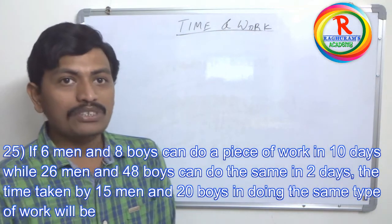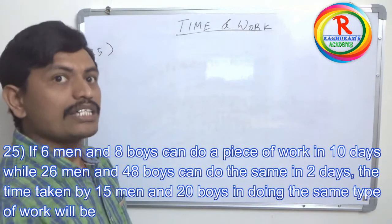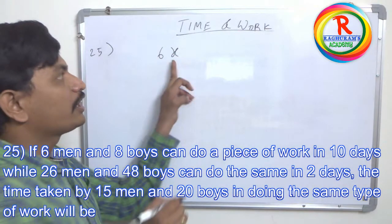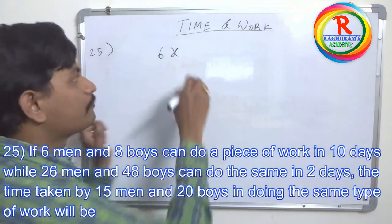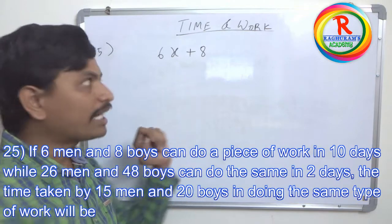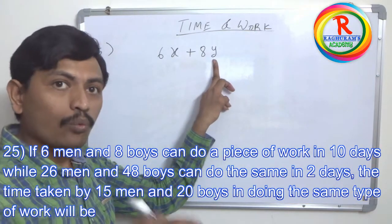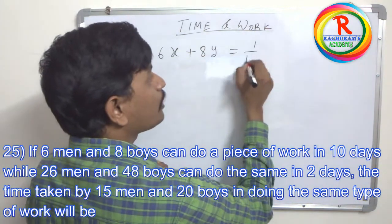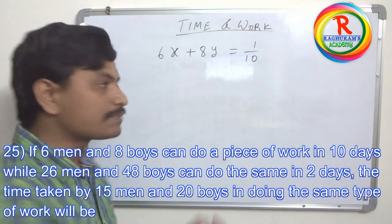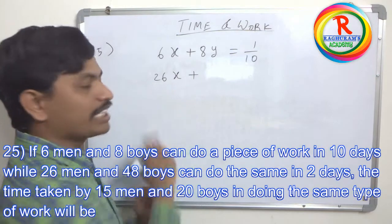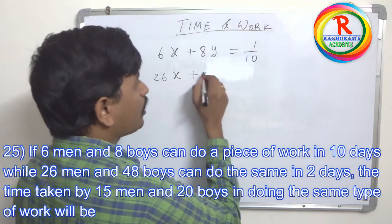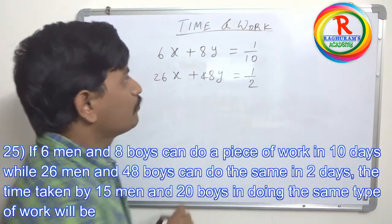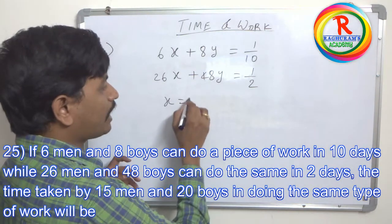In this type of problem, we take one day's work of a man as X and one day's work of a boy as Y. So six men and eight boys complete one-tenth of the work per day: six X plus eight Y equals one by ten. And twenty-six men and forty-eight boys complete one-half of the work per day: twenty-six X plus forty-eight Y equals one by two. We solve these equations to get the values of X and Y.